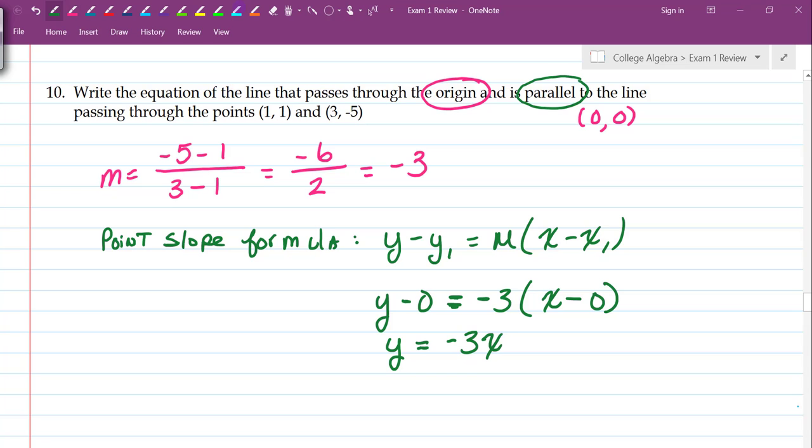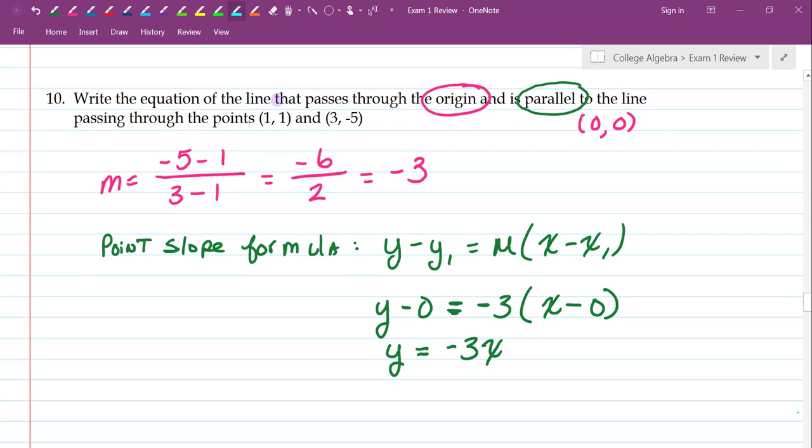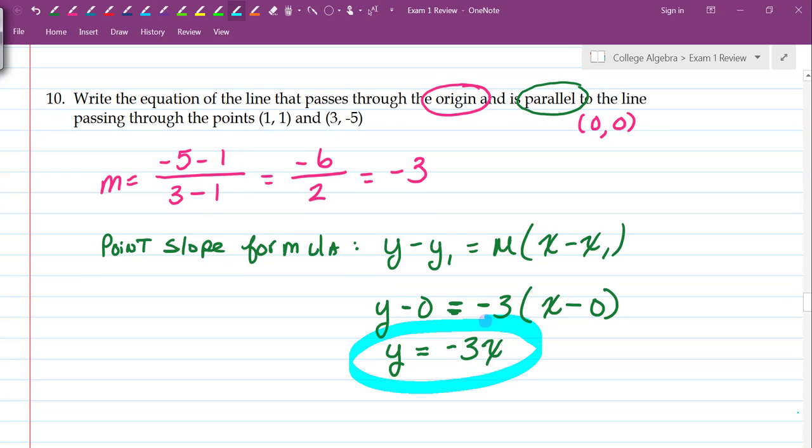And that is our final answer. Right there. So Y equals negative 3X is the equation of the line that is parallel to the line that passes through the points 1, 1, 3, negative 5. Alrighty, let me know if you have any questions.